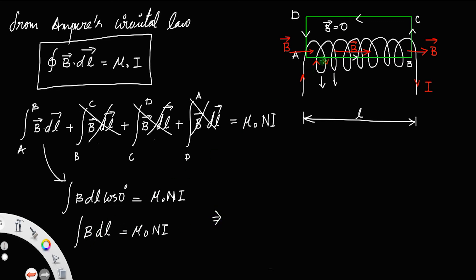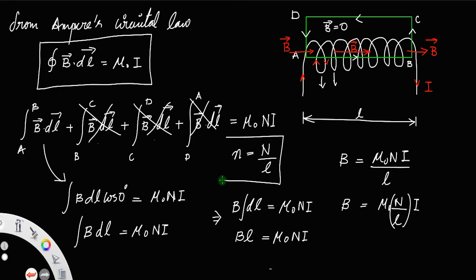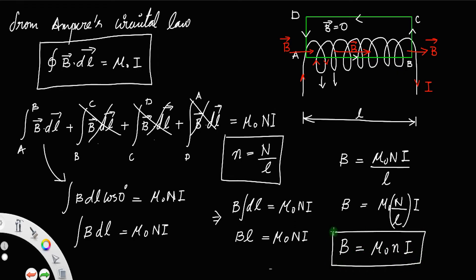Since the magnetic field inside the solenoid is constant everywhere, B can be taken out of the integral: B times the integral of dL equals μ₀nI. Integrating dL gives the length L, so B·L = μ₀nI, which gives B = μ₀nI/L. This can be written as B = μ₀(N/L)·I = μ₀nI, where n is the number of turns per unit length. This is the expression for the magnetic field due to a solenoid.